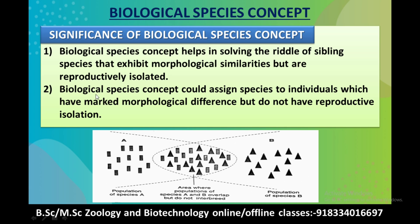Secondly, biological species concept could assign species to individuals which have marked morphological differences but do not have reproductive isolation. These two are very important significance of biological species concept.